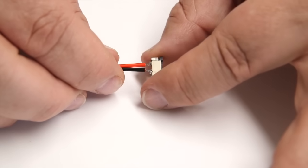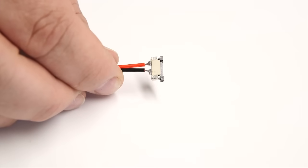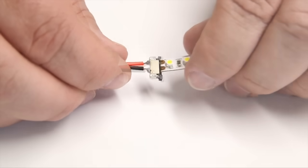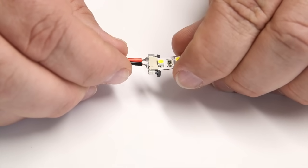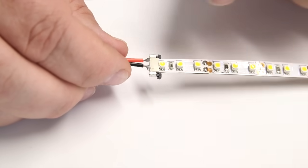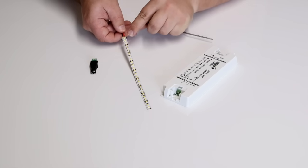To fit the connector gently pull back the black locking bar. Insert the tape into the slots until it is fully located and ensure that the copper connection points are within the body of the connector.